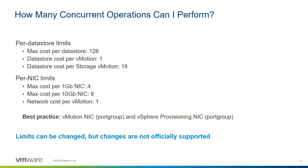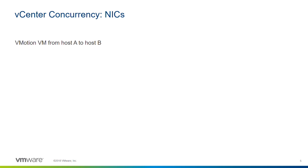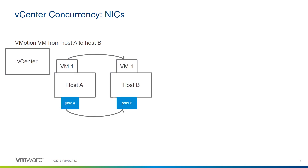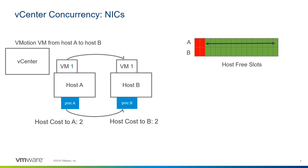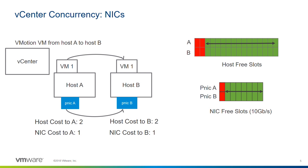Let's get back to per-NIC limits briefly. Imagine you want to vMotion a VM from host A to host B — that requires copying a lot of traffic over the physical NIC. There are now two limits at play: a host is charged two units for being involved in a vMotion, so host A as source is charged two units and host B as destination is also charged two units. Additionally, the NIC is charged one unit on both the source and the destination. For a 10-gig NIC with eight total slots, vCenter must consider both the host-slot limits and the NIC limits when issuing operations.